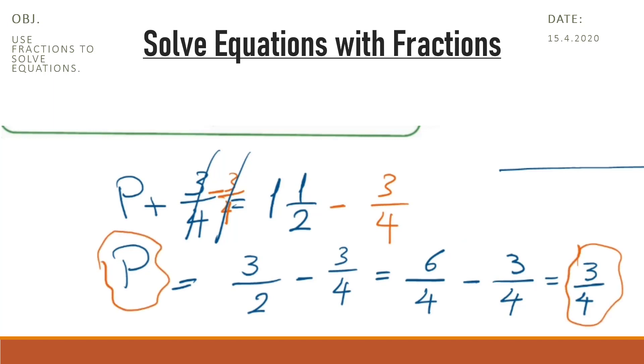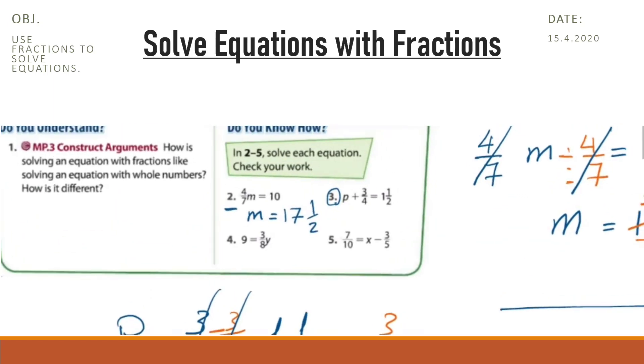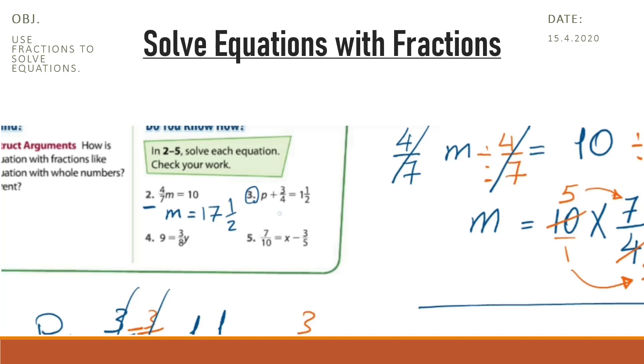So we have 3/4. This is the value of the unknown P. So the second one here, number 3, P equals 3/4. Now, try to solve question 4 and question 5, and come back to see the answer. I'm waiting for you.